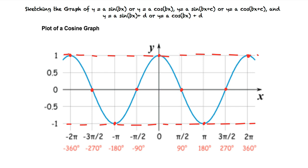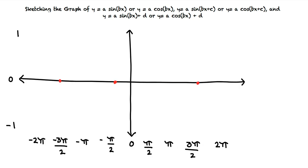Let's quickly sketch the general graph of cosine from memory to make sure we understand. I'll start by sketching some points where I know the graph will cross the x-axis. This is at negative three pi over two, negative pi over two, pi over two, and three pi over two. Next, I'll sketch some points where the graph will reach its maximum of one. This is at negative two pi, zero, and two pi. Now I'll do the same thing for the minimum of negative one. This is at negative pi and pi. Finally, I can connect the dots to get a final sketch of our cosine graph.